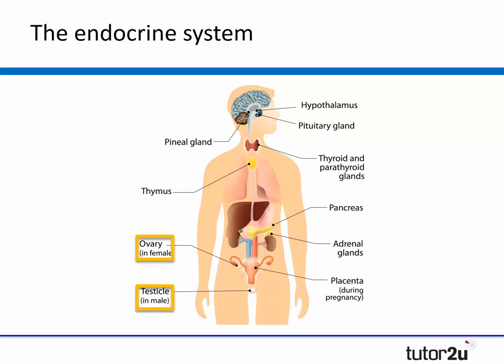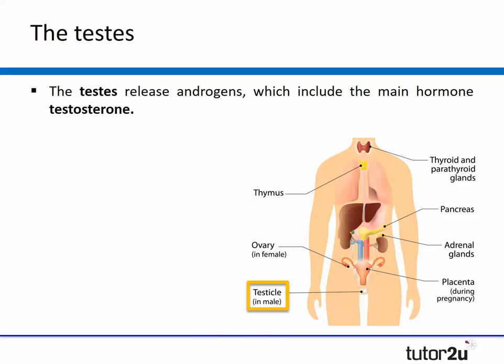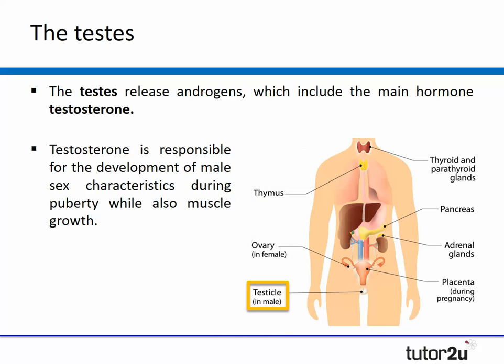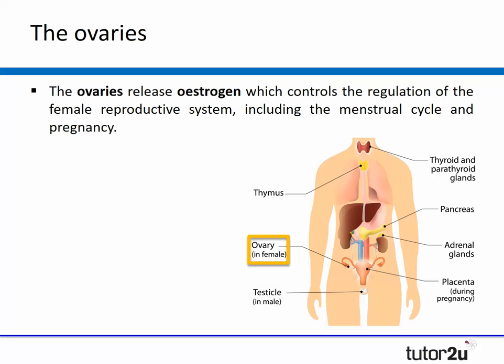Finally, let's take a look at the male and female sex organs — the testes and the ovaries. The testes release androgens which include the main hormone testosterone, responsible for the development of male sex characteristics during puberty and also promotes muscle growth. The ovaries release estrogen, which controls the regulation of the female reproductive system including the menstrual cycle and pregnancy.